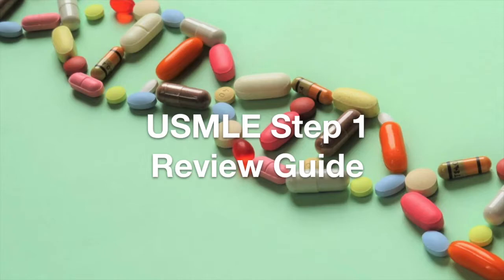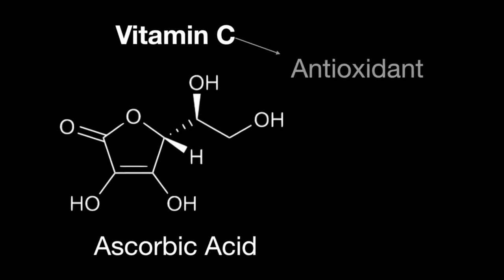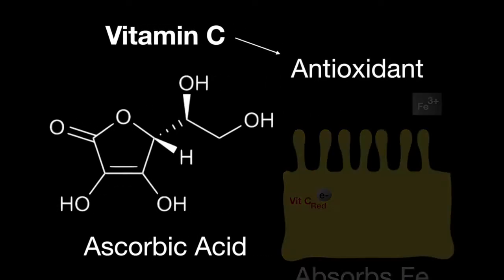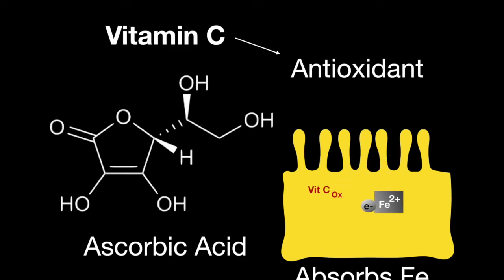Welcome to the Step 1 Review Study Guide. In this lesson, we learn about vitamin C. Vitamin C is also called ascorbic acid. It is an antioxidant that is involved with absorbing iron by reducing it to Fe2+.